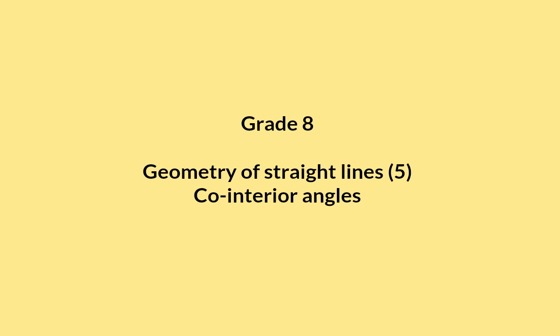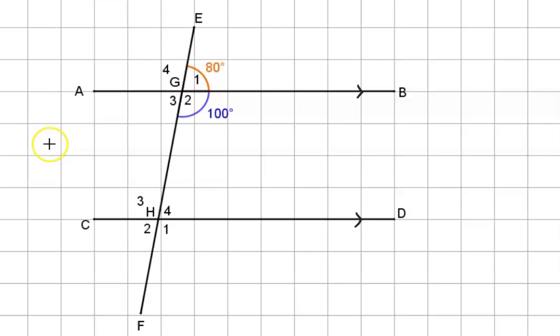In this video we continue with parallel lines and we focus on co-interior angles. If in the sketch we focus on angle g1 and g2, we know that they form a straight line and therefore have to add up to 180 degrees.